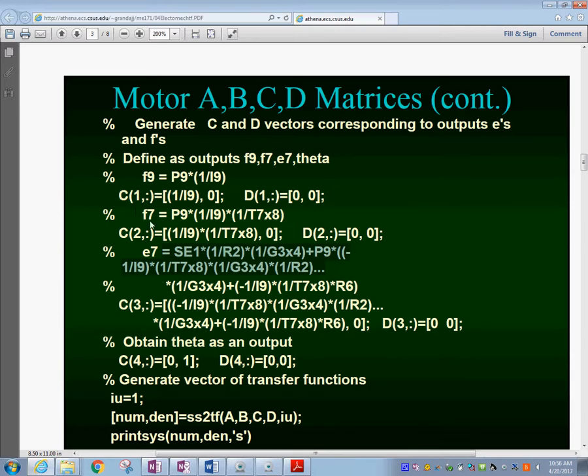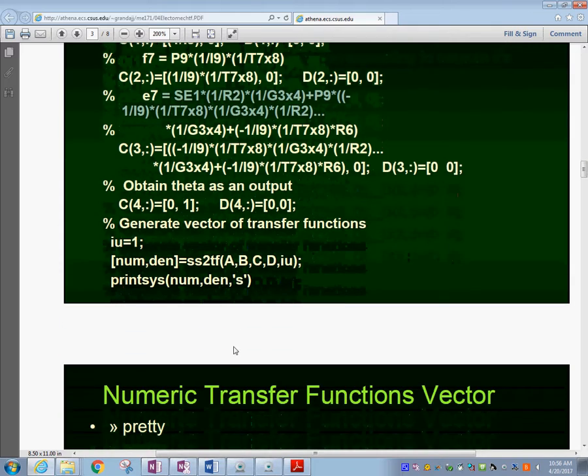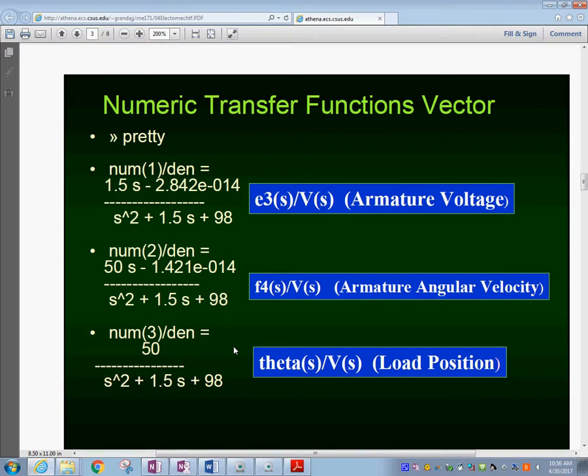We have f9, which would be the first one over here for the C matrix. Then we have f sub 7, which is number two, and then you have e7, which will be number three. In this case we have chosen to add theta as an output also, so we add C sub 4. Once we do this, we can generate the transfer functions—the different transfer functions for the different outputs.